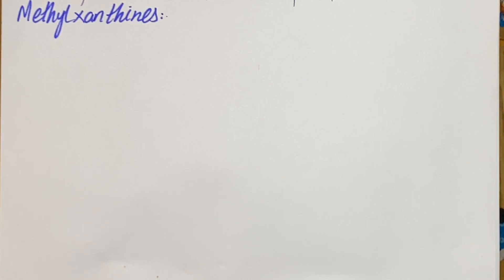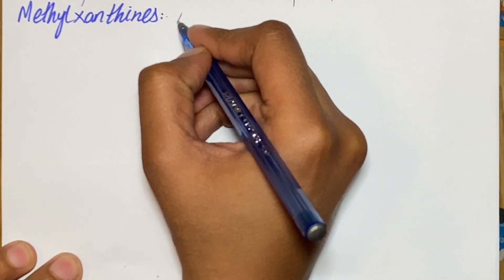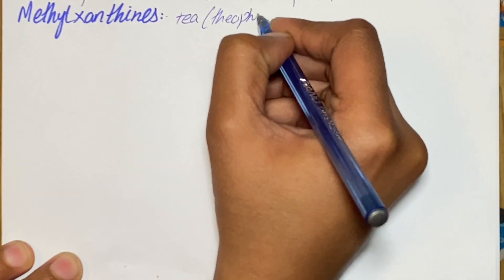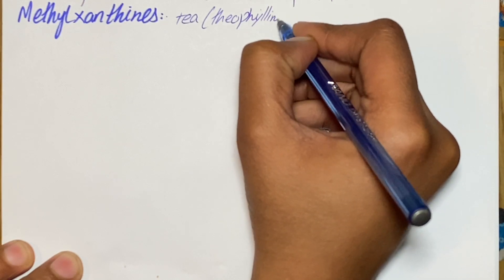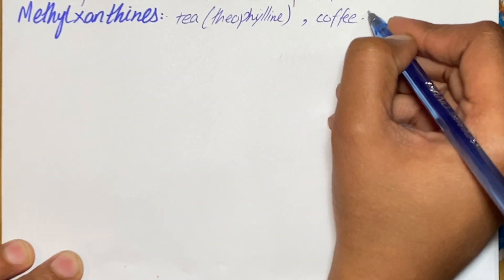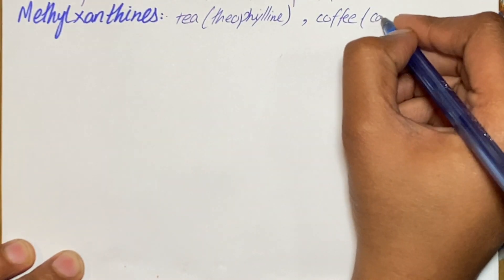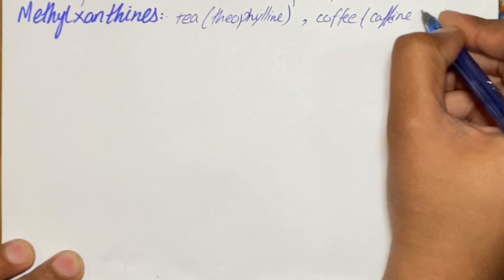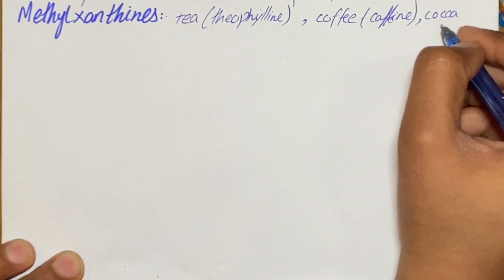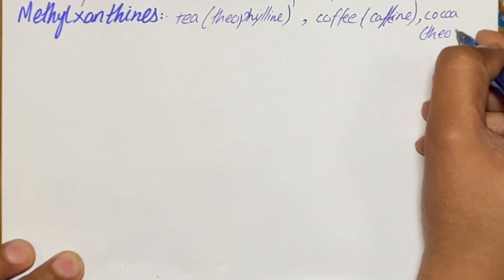In today's video we are going to be talking about methylxanthines, which are being used for the treatment of asthma. The sources of methylxanthine are: tea, from which theophylline is obtained; coffee, from which we get caffeine; and cocoa, from which we get theobromine.